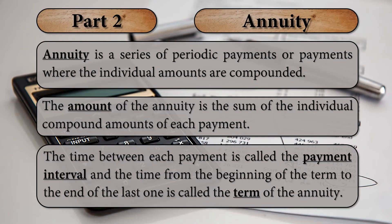Annuity is a series of periodic payments or payments where the individual amounts are compounded. The amount of the annuity is the sum of the individual compound amounts of each payment. The time between each payment is called the payment interval, and the time from the beginning of the term to the end of the last one is called the term of the annuity.